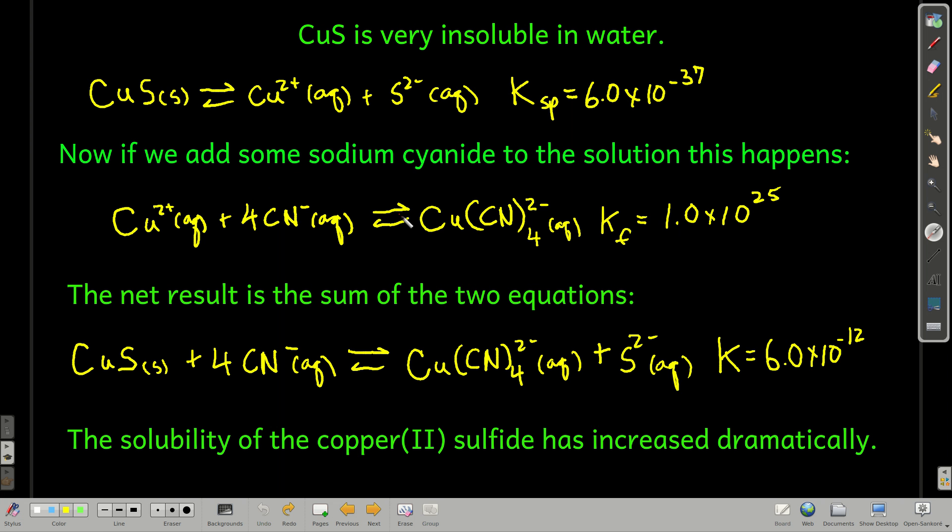Now, this is something that we can do with complex ions. Complex ions can increase the solubility of some pretty insoluble compounds. For example, copper(II) sulfide is really insoluble. Ksp is 6 times 10 to the minus 37th, and that's the Ksp expression.